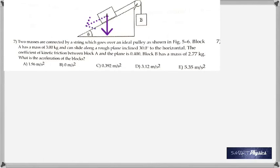That brings us to the seventh question. Two masses are connected by a string which goes over an ideal pulley as shown. Block A has a mass of 3 kg and can slide along a rough inclined plane 30 degrees to the horizontal. The coefficient of kinetic friction between block A and the plane is 0.4. Block B has a mass of 2.77 kg. What is the acceleration of the blocks? This is a nice question and it's very important that you understand how it's done. You got to look at the forces acting on each object. When you look at B, there are only two forces that act on it. One is its weight mg acting straight down, vertically down. The second is the tension in the string.